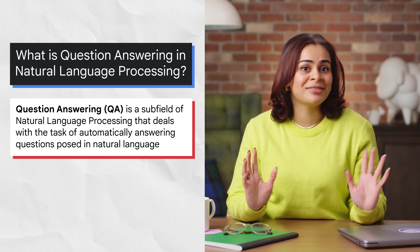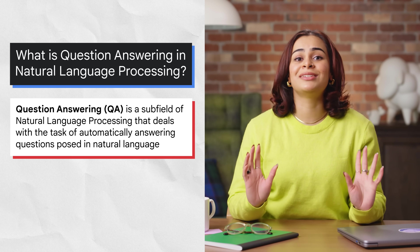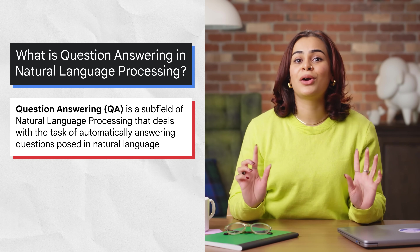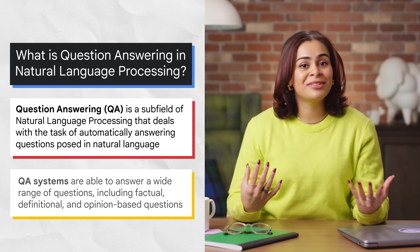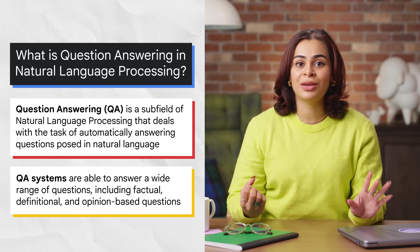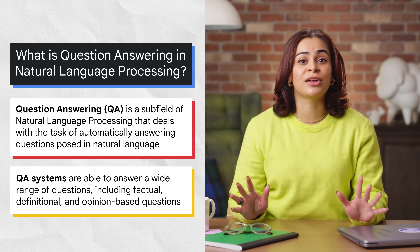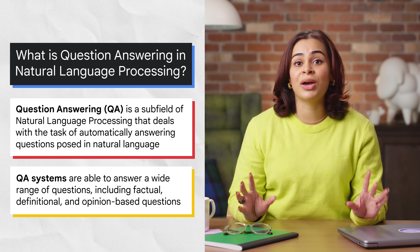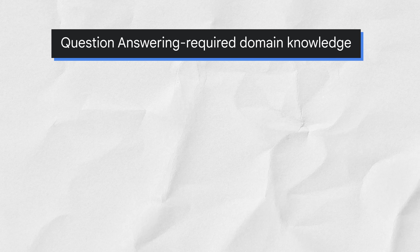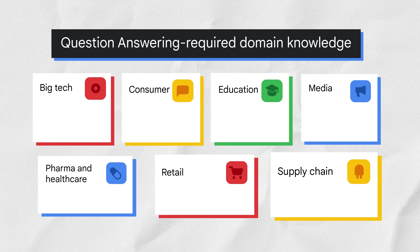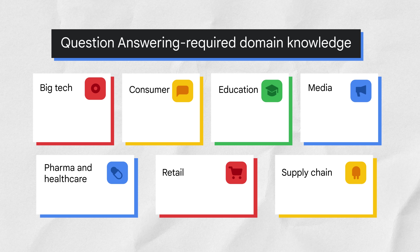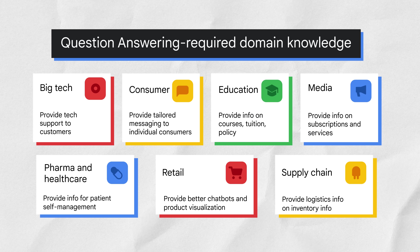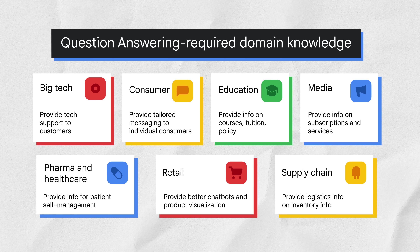Question answering, or QA, is a subfield of natural language processing that deals with the task of automatically answering questions posed in natural language. QA systems are typically trained on a large amount of text and code, and they are able to answer a wide range of questions, including factual, definitional, and opinion-based questions. Domain knowledge is required to develop these question answering models — for customer support, healthcare, or supply chain. But using generative QA, the model generates free text directly based on the context. There's no need for domain knowledge.